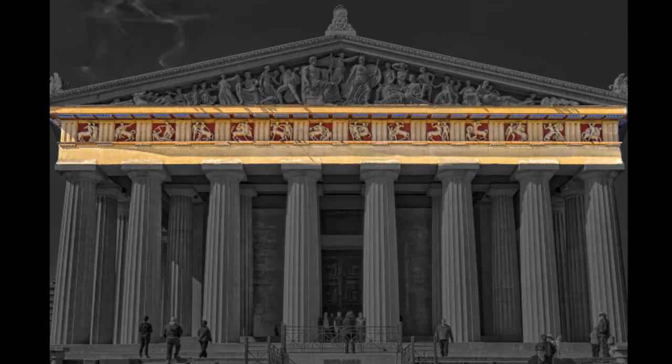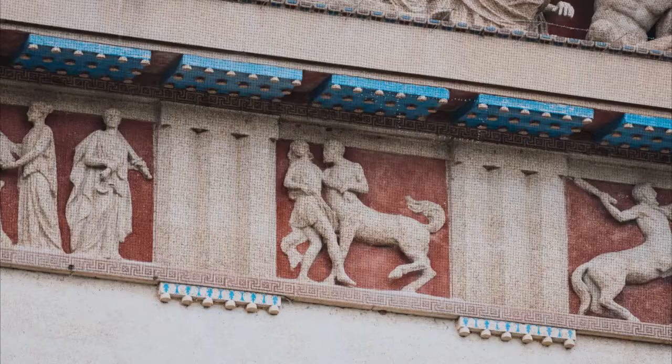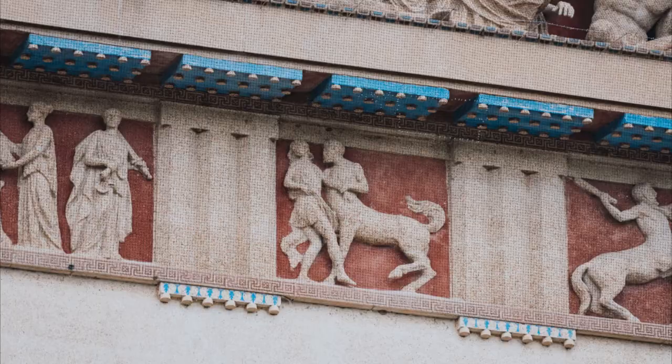Look closely at the entablature. See those square panels with figures? Those are called metopes. They may look small from the ground but are actually over four feet tall.